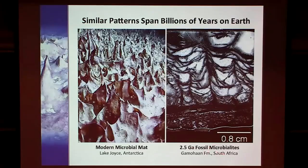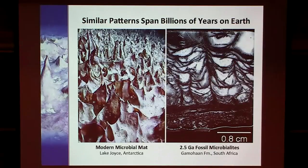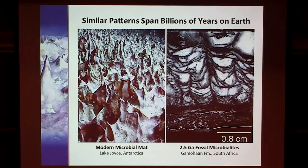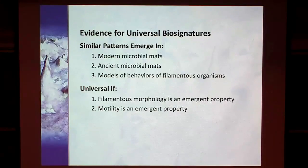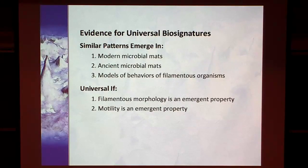I also have another student working on fossils from South Africa where we think these have the same sort of shape. The organisms I used in the lab are not the same as the ones in the fossils, and they're definitely not the ones present two and a half billion years ago. So we have computational models, bacteria experiments, modern microbial mats, and ancient microbial mats. My thought is that if you end up with filaments in a microbial community, they're likely to make some of these patterns — something we could actually look for on Mars.